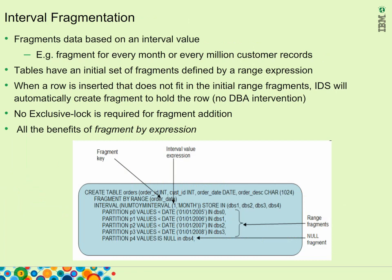IDS 11.7 now contains a feature called Interval Fragmentation. As shown in the SQL CREATE TABLE command, the FRAGMENT BY RANGE clause allows one to specify a fragment key — in this example, it is the order date. The INTERVAL clause then allows one to specify a NUMTOYM interval (number to year-month interval), where an interval value of 1 means a new interval is automatically created each month. By changing the value to 2, the system creates a new interval every 2 months. If month is changed to year, then the interval is by year.